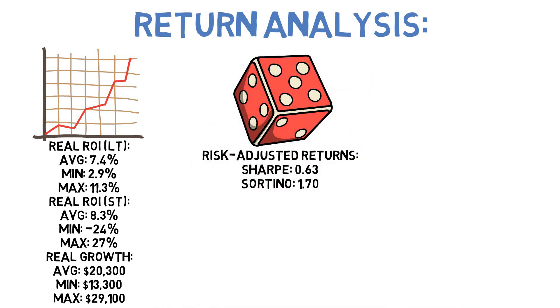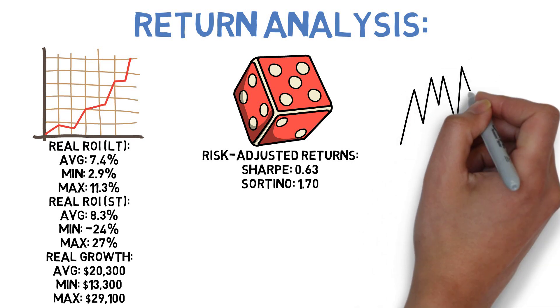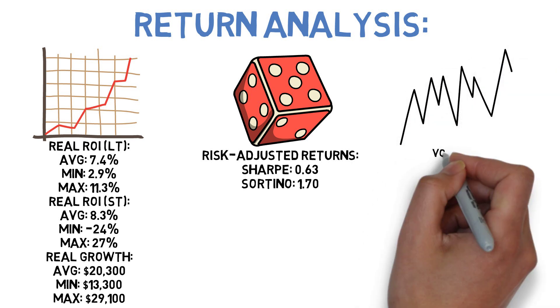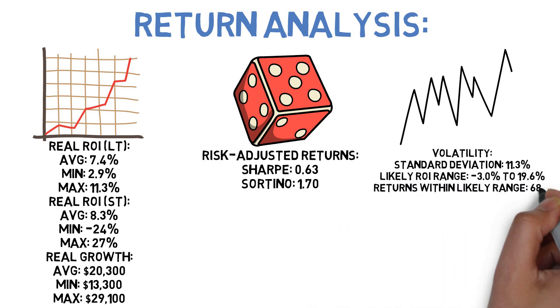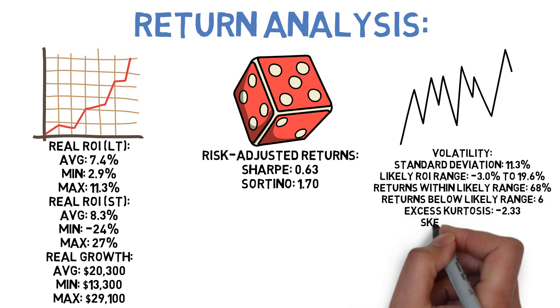Next, let's look at some volatility metrics. The average standard deviation of returns for the Swenson approach was 11.3%, which means that in any given year, we can expect that most of our returns will fall somewhere between negative 3% and 19.6% with this strategy. The strategy had an excess kurtosis value of negative 2.33, suggesting that the majority of its returns were within a few standard deviations of our averages. Roughly 68% of the returns during these years fell within that expected range, and only six of them fell outside of it for the worse.